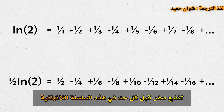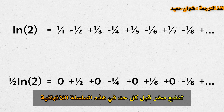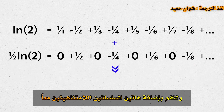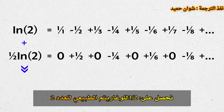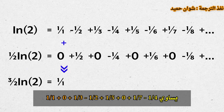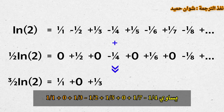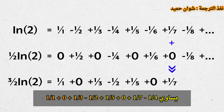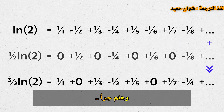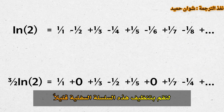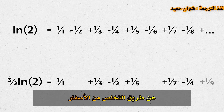Let's put a 0 before each term in this infinite series and add these two infinite series together. We get 3 over 2 ln 2 equals 1 over 1, plus 0, plus 1 over 3, minus 1 over 2, plus 1 over 5, plus 0, plus 1 over 7, minus 1 over 4, and so on. Let's clean this up a bit by getting rid of the zeros.